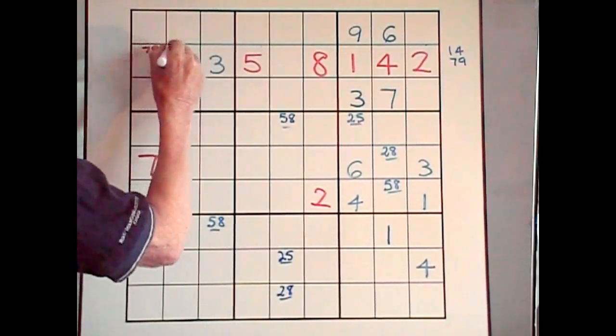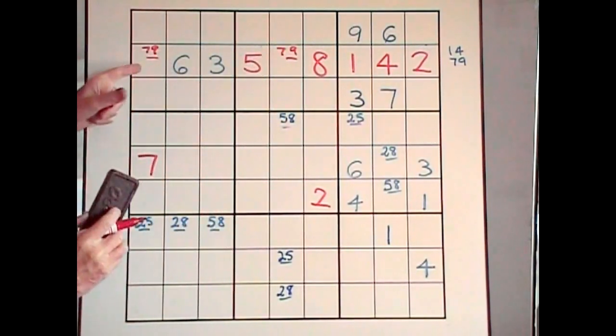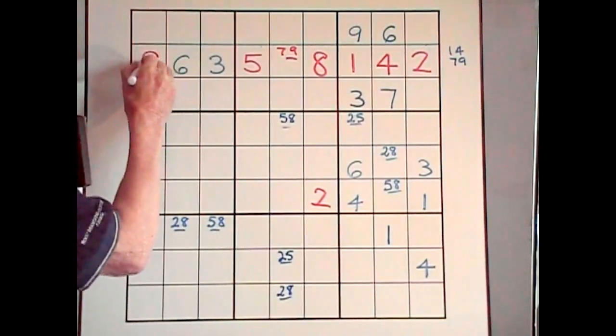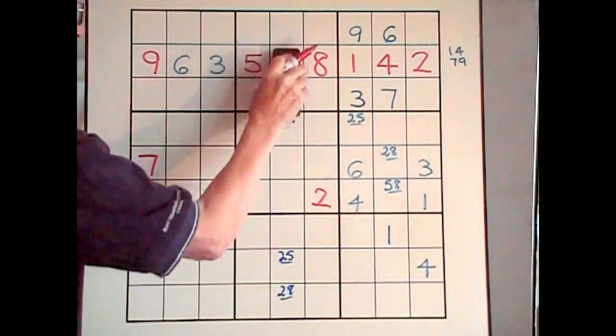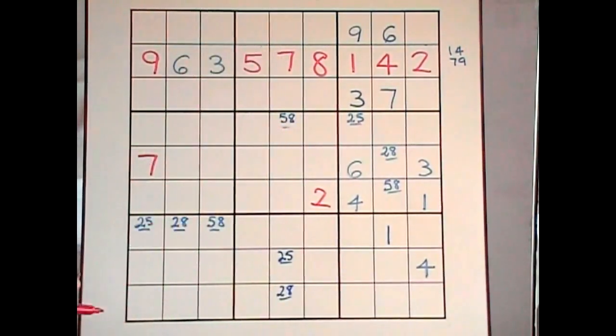We know from previous experience that immediately that 7 cancels this out, so that becomes a 9, and this becomes your 7. And we've solved that whole puzzle just understanding those little tricks.